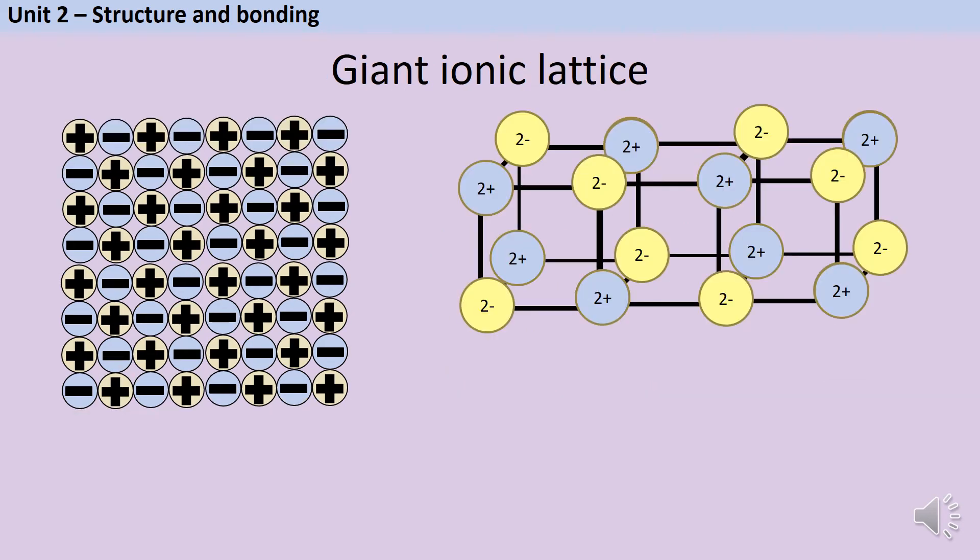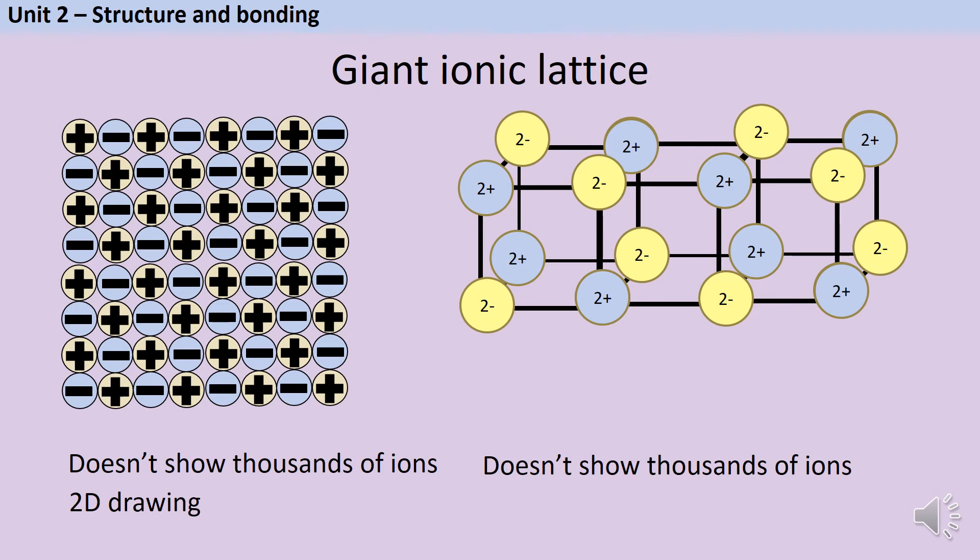To represent the structure of this giant ionic lattice, we could also represent it like this picture on the right. Now one disadvantage of both of these styles of model is that they're not really showing that this is a giant structure. We know that a giant ionic lattice will contain thousands or even millions of ions, and these diagrams don't really show that very clearly. Another disadvantage of the diagram on the left is that it doesn't really show that this is a 3D structure. When we say that that strong electrostatic force of attraction is acting in all directions, we don't just mean up and down and left to right, we also mean forwards and backwards.